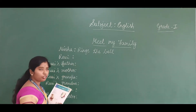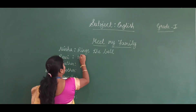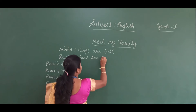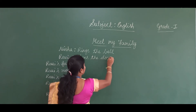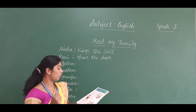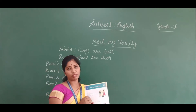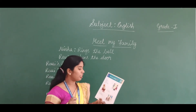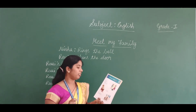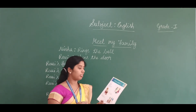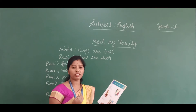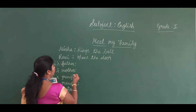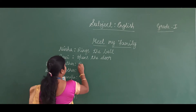Who opens the door? Ravi opens the door. Now let us see who all the family members are that he introduces. First he introduces his father: 'This is my father. He is reading a book.' What is Ravi's father doing? He is reading a book.